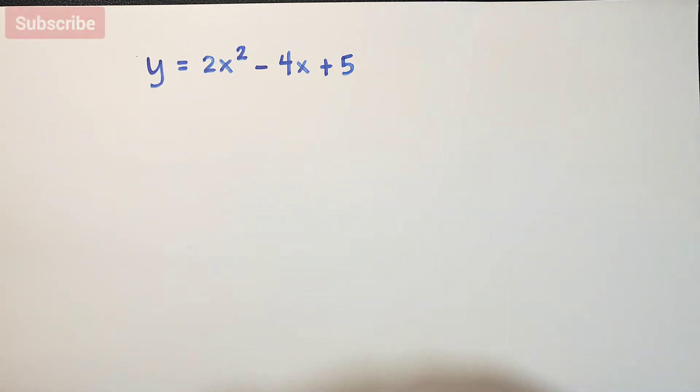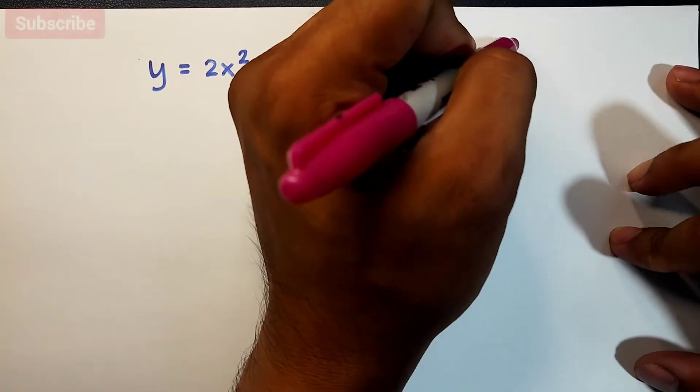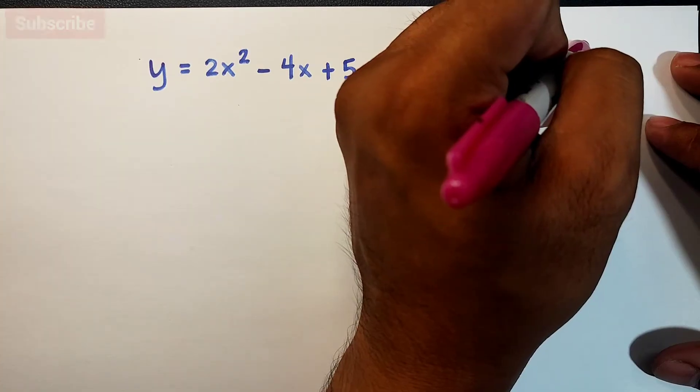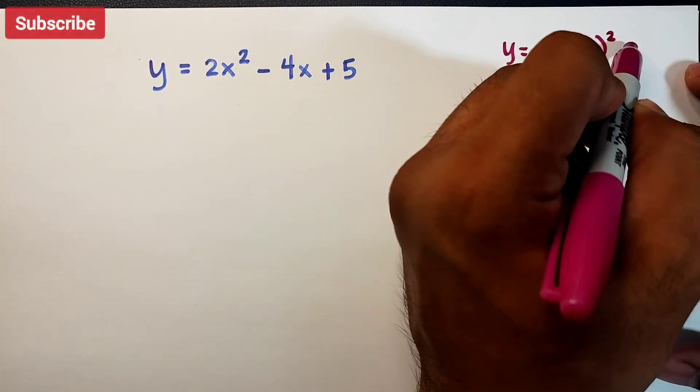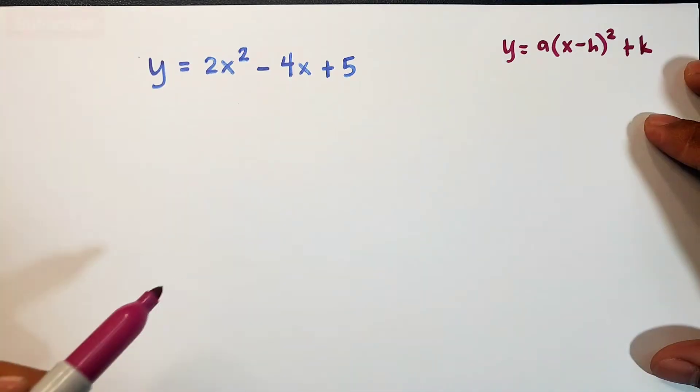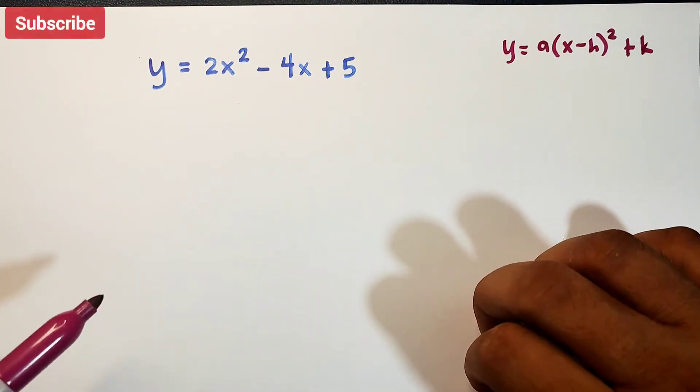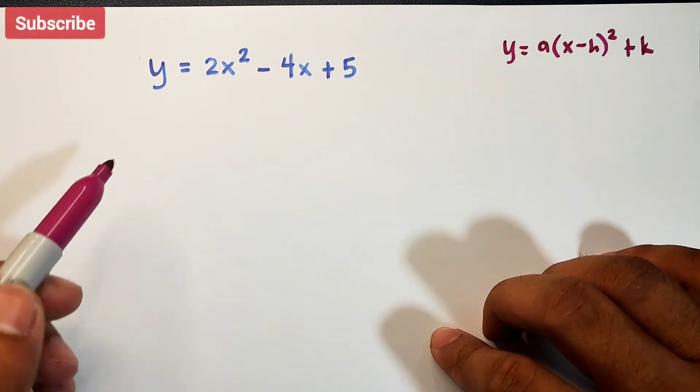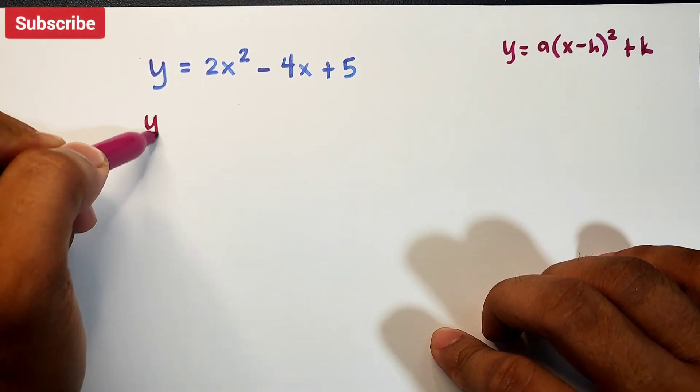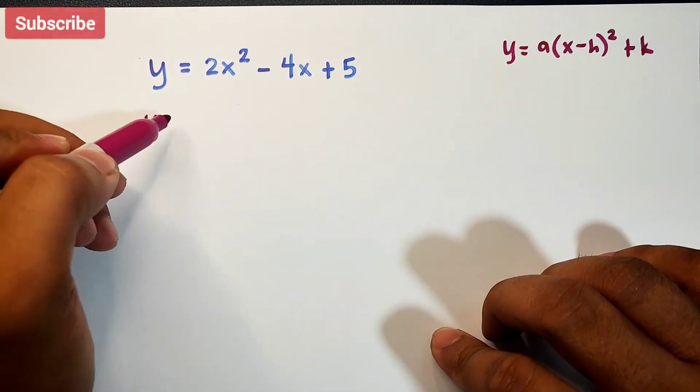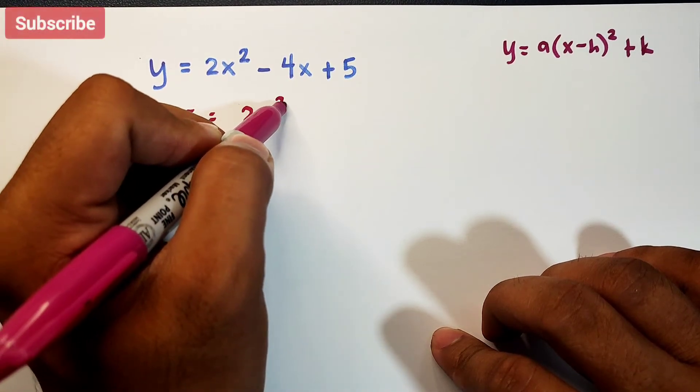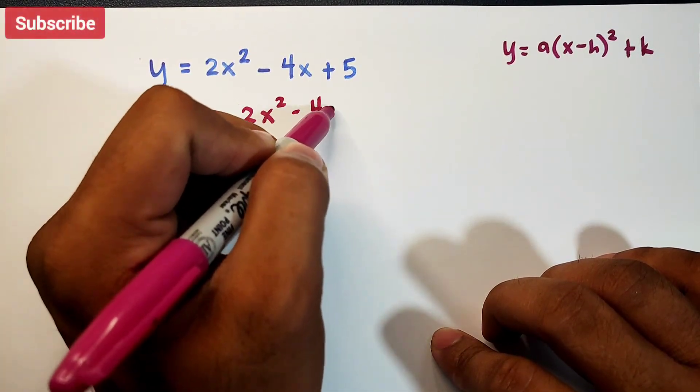Our target is to make this y equals a times x minus h squared plus k. First step is to move this constant 5 to the other side of the equation. It will become y minus 5 equals 2x squared minus 4x.